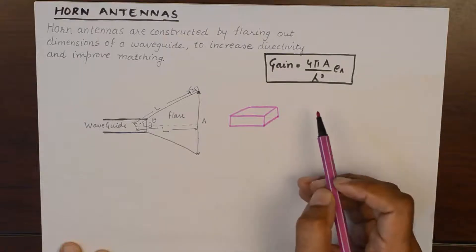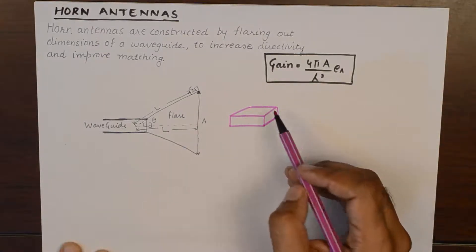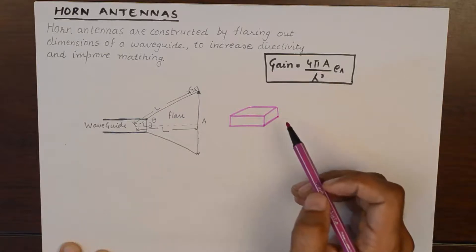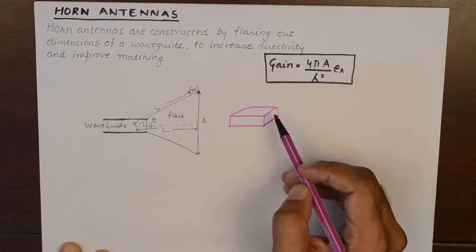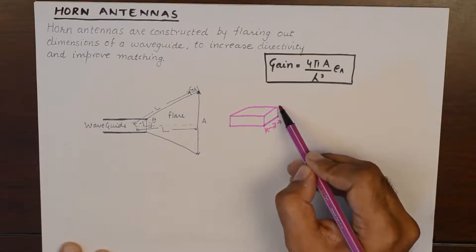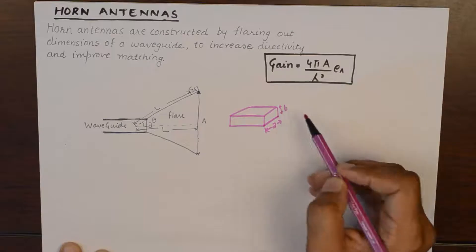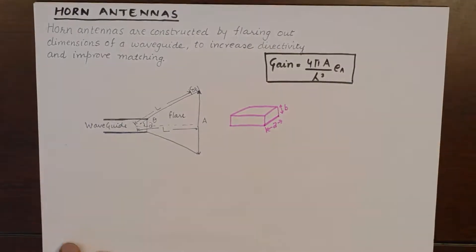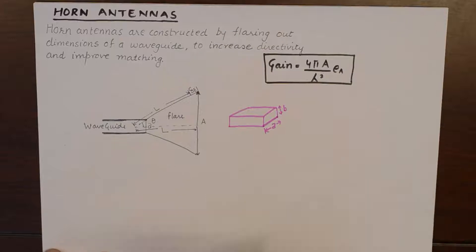If we talk about a rectangular waveguide, it has a matchbox structure and we know that it has two dimensions A and B. Now these dimensions are pretty small, they are in the order of centimeters. The reason behind those small dimensions are the ability to propagate microwaves in these waveguides.